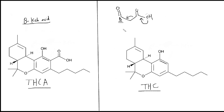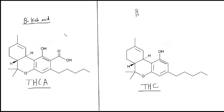So what happens here? As you can see, we don't have this beta-keto acid, but we do have something called an enol. Enol is this part — basically a double bond that has an alcohol on it. And it can transform itself into a ketone, the keto form.